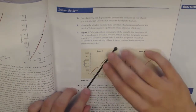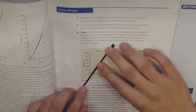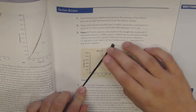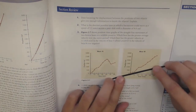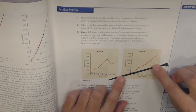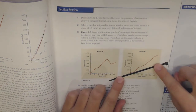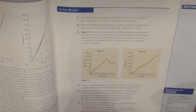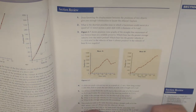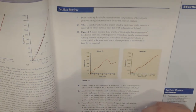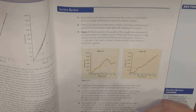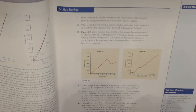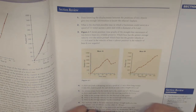At T equals 10 minutes, you put it about tangent to the graph for bear A — it looks pretty steep. Then if you bring it over to bear B, it's pretty shallow. So you can say that bear A has a greater velocity at T equals 10 minutes because the slope of its position graph is greater than the slope of bear B's position graph at T equals 10 minutes.